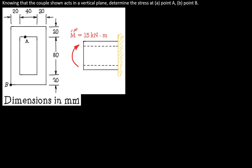In this problem we are dealing with a beam that has the following characteristics. First, it is a prismatic member, meaning the cross-sectional area along the beam is the same. Second, this beam possesses a plane of symmetry — a plane that runs along the length of the beam in the x-axis. This is the plane of symmetry, and this will be our y-axis.